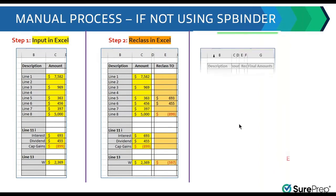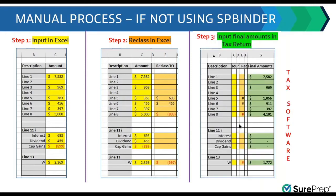How do you enter those in the tax return? That's step 3. You input the final amounts in the tax software manually. So whatever are the final amounts — passive, non-passive — you manually pick up those numbers and enter them in the tax return.